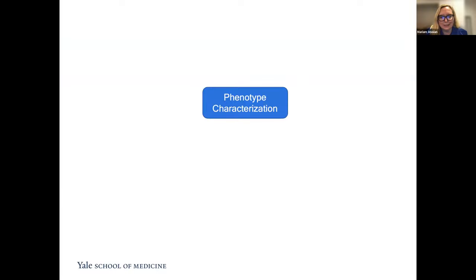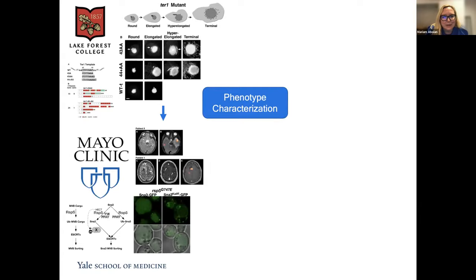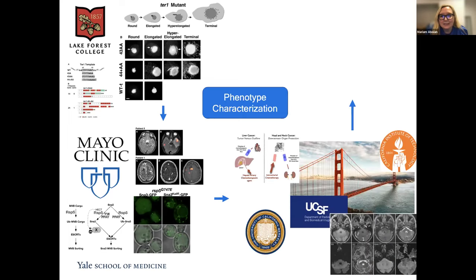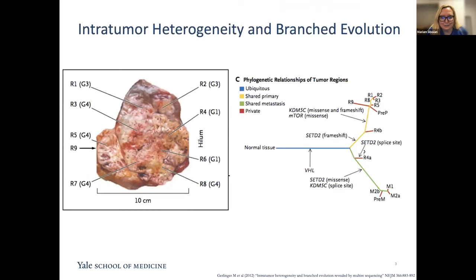My whole research career has been about characterization of phenotypes. I started in college studying meiosis and cell division in Tetrahymena thermophila, focusing on telomeres. In my MD-PhD, I focused on Saccharomyces cerevisiae, looking at protein trafficking and different phenotypes. In my residency and fellowship, I worked mostly on humans but also on pigs developing novel biomedical devices. And now at Yale, I work mostly on humans but also on rats, characterizing different phenotypes.